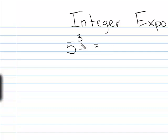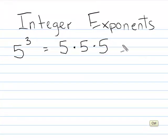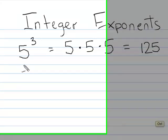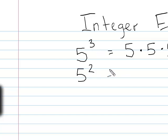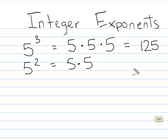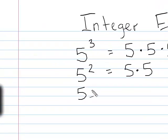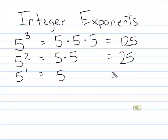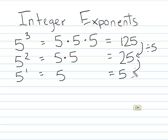First I'm going to start with five to the third — the exponent here is positive. Five to the third is five times five times five, and that is 125. Now I'm going to go with a pattern: five to the second power is five times five, which is 25. Five to the first is just five. Notice: 125 divided by five is 25, and 25 divided by five is five — we're dividing by five each time.